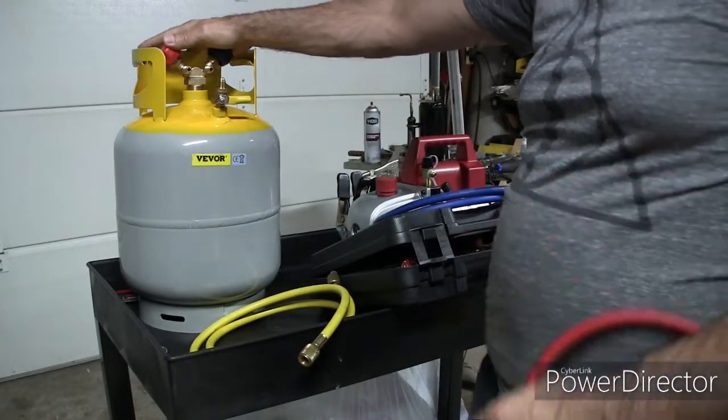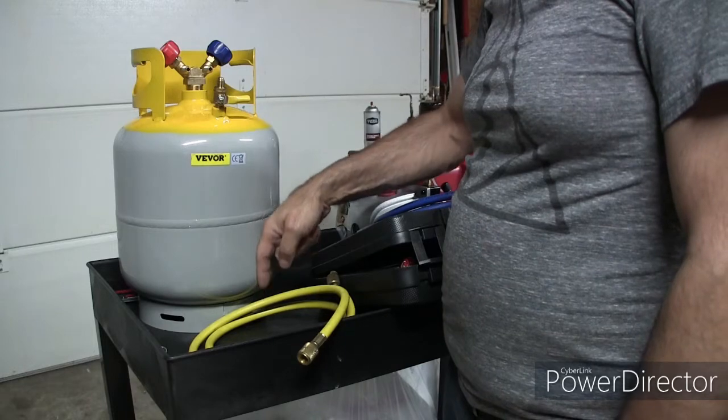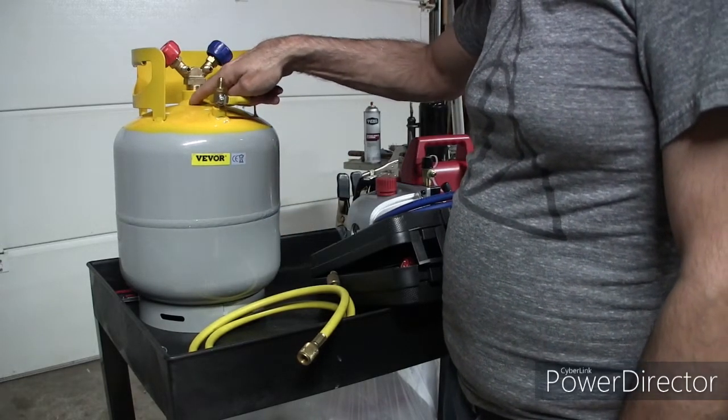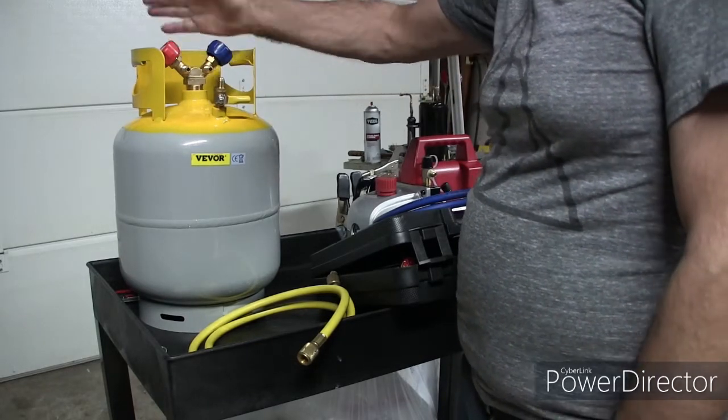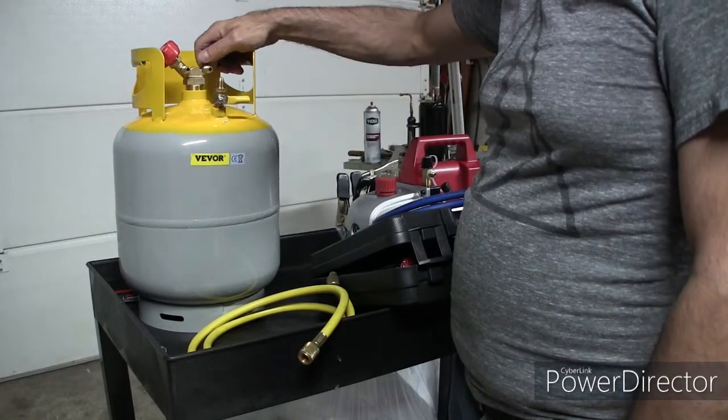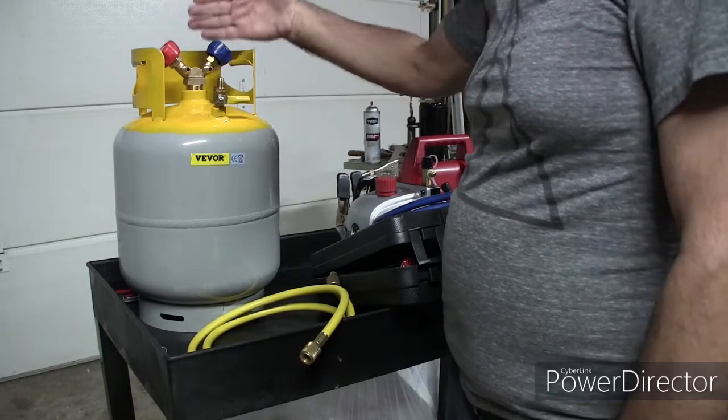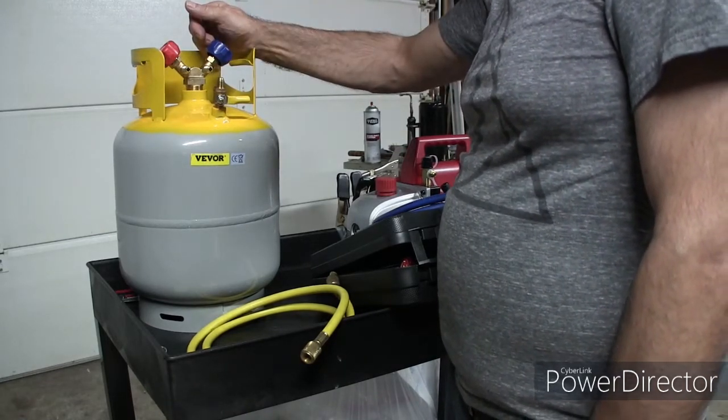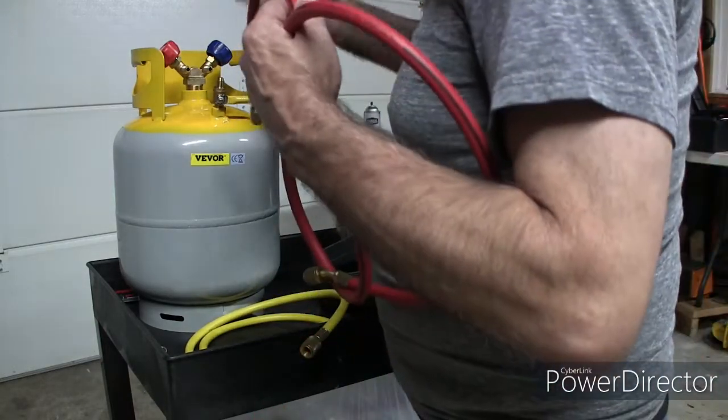The way these tanks are set up is one of these two sides has a long tube that goes down to the bottom, and one of them just has an opening up here at the top of the tank. So one of them would give you liquid, with the tank upright, one of them would give you liquid and one of them would give you gas. There's no standard in the industry which one is red and which one is blue.